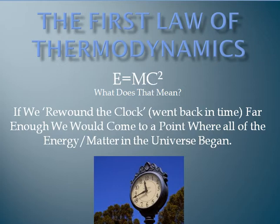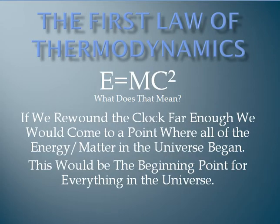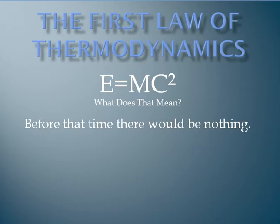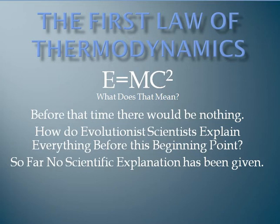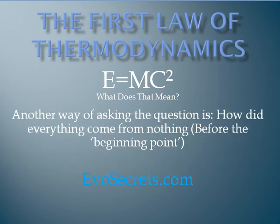That causes a huge problem for evolutionists, because with evolution, if you have a beginning, what happens if you go back before the beginning? Before that time, there would be nothing. How do evolutionists and scientists explain everything before this beginning point? Essentially what they're saying is that all of the matter, energy, everything came from nothing, because that's what would be there before that time. This does mean there was a beginning point, and of course this totally eliminates evolution as having any possibility.